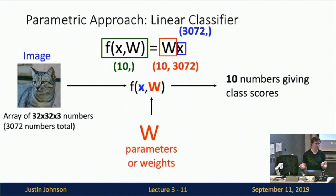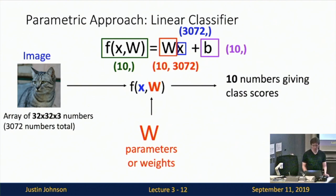Sometimes you'll also see linear classifiers with a bias term: f = Wx + b, where b is a vector of 10 elements giving offsets for each of the 10 categories. As a concrete example with a 2x2 grayscale image and three categories — cat, dog, ship — the weight matrix W has shape 3x4 and the bias has shape 3.